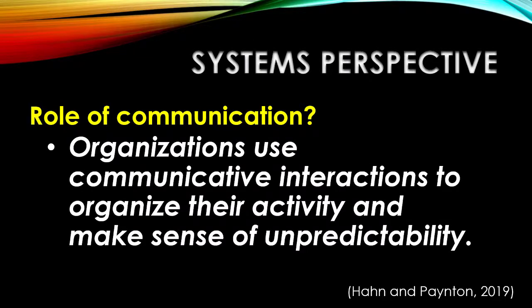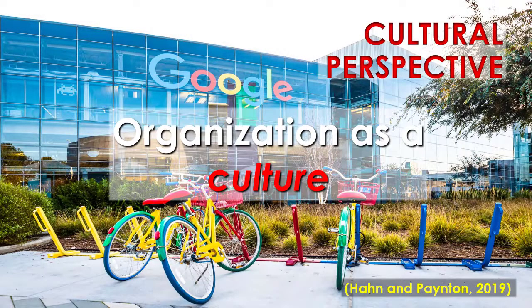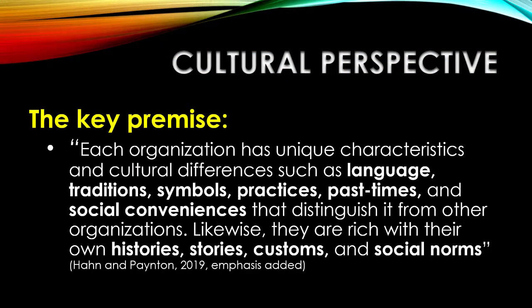There's a real sense of organic growth and interdependence between parts in the systems perspective, although it's also starting to feel a little bit less human again — this isn't a science of impersonal biochemistry and physics. That's where the final theoretical perspective comes in: a cultural perspective. If we understand the organization as a culture, then a key premise is that each organization is going to have unique characteristics and cultural differences such as language, traditions, symbols, practices, pastimes, and social conveniences that distinguish it from other organizations. Likewise, they are rich with their own histories, stories, customs, and social norms.